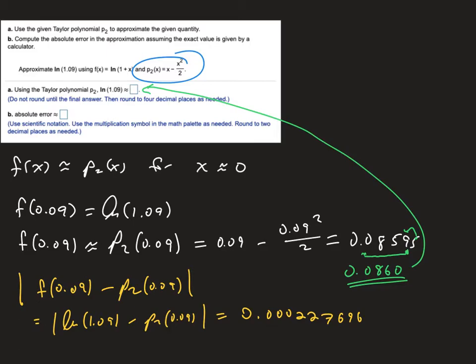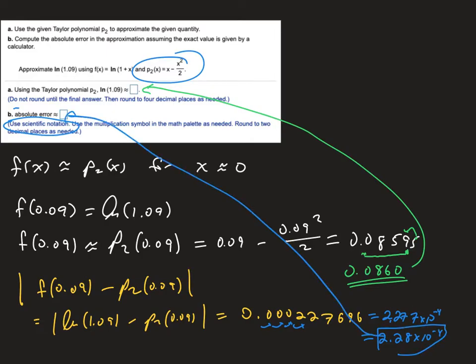Once again, they're challenging your scientific bones here. They want this in scientific notation with two decimal places. And so if we move our decimal place 1, 2, 3, 4, we can see moving the decimal place 4 would make this 2.277 times 10 to the minus 4. They only want two decimal places, so the number I would enter here is 2.28 times 10 to the minus 4. So that will be my answer for there. So that's what they mean by two decimal places in scientific notation. This is what they mean by four decimal places for the original number.